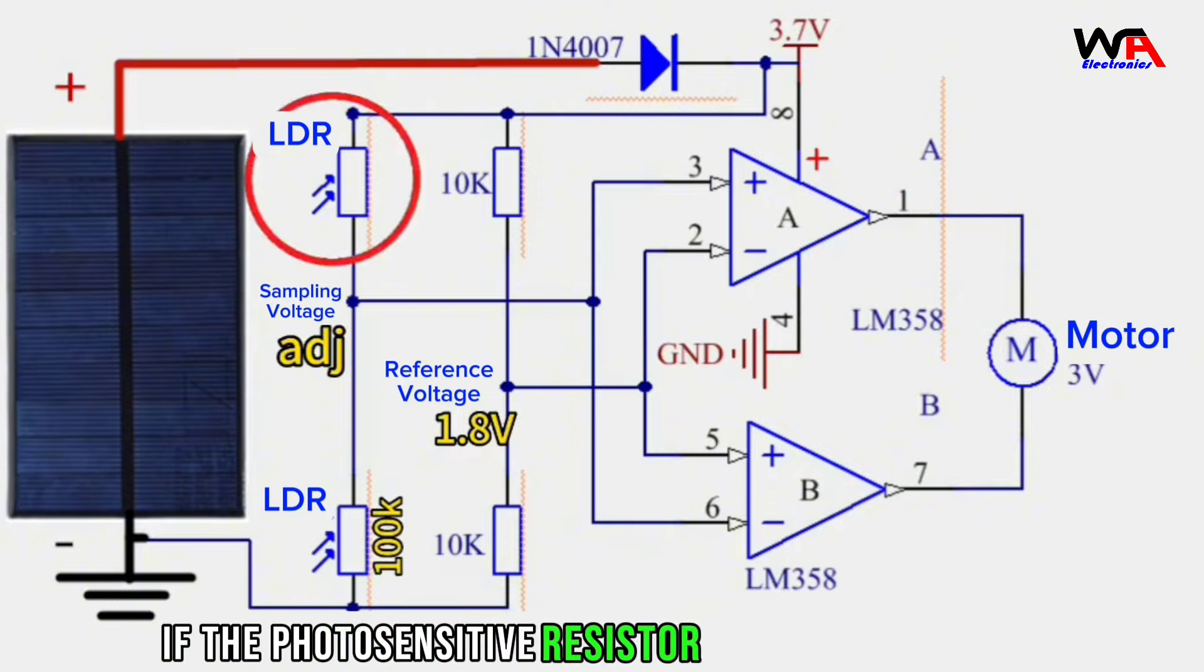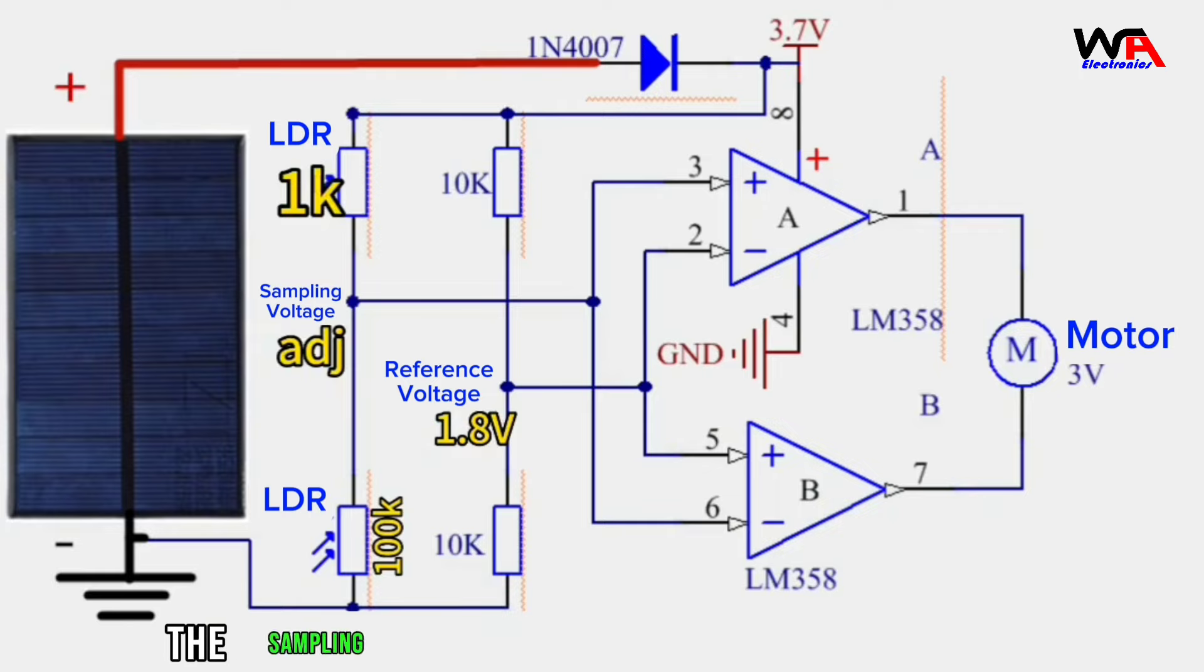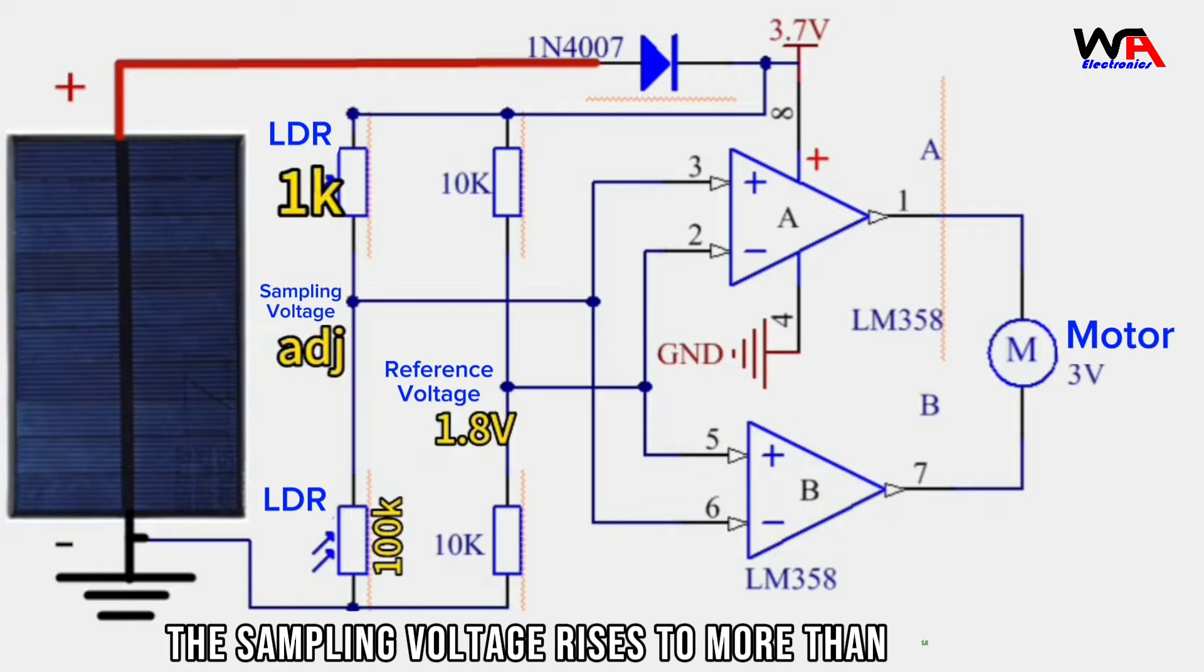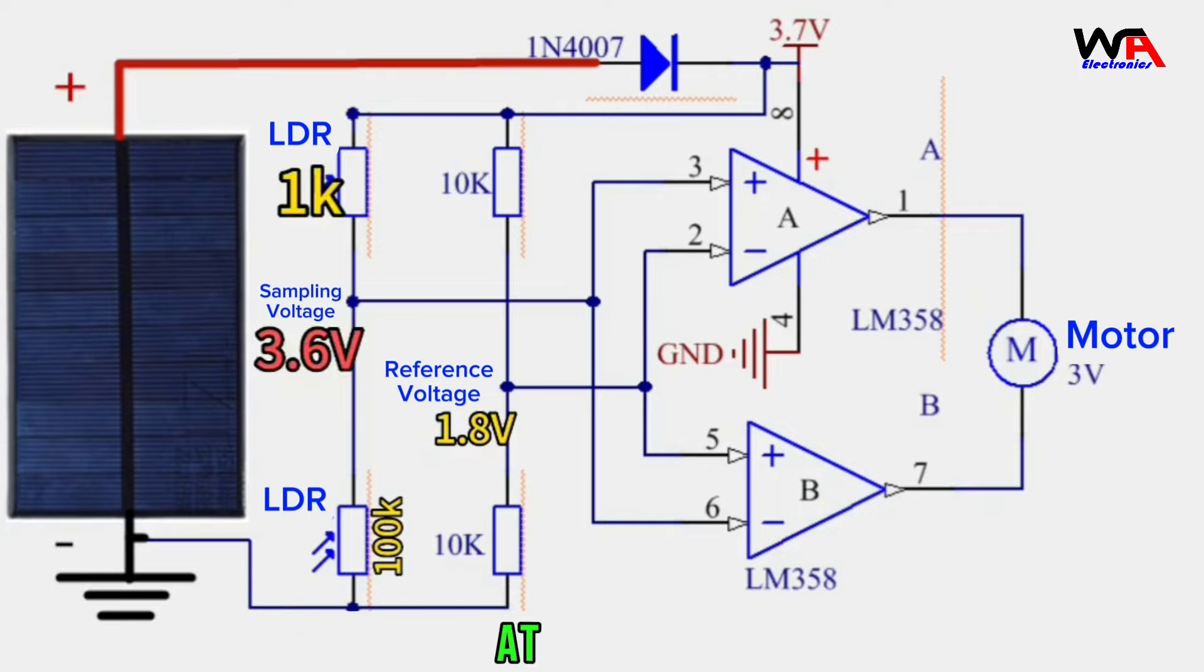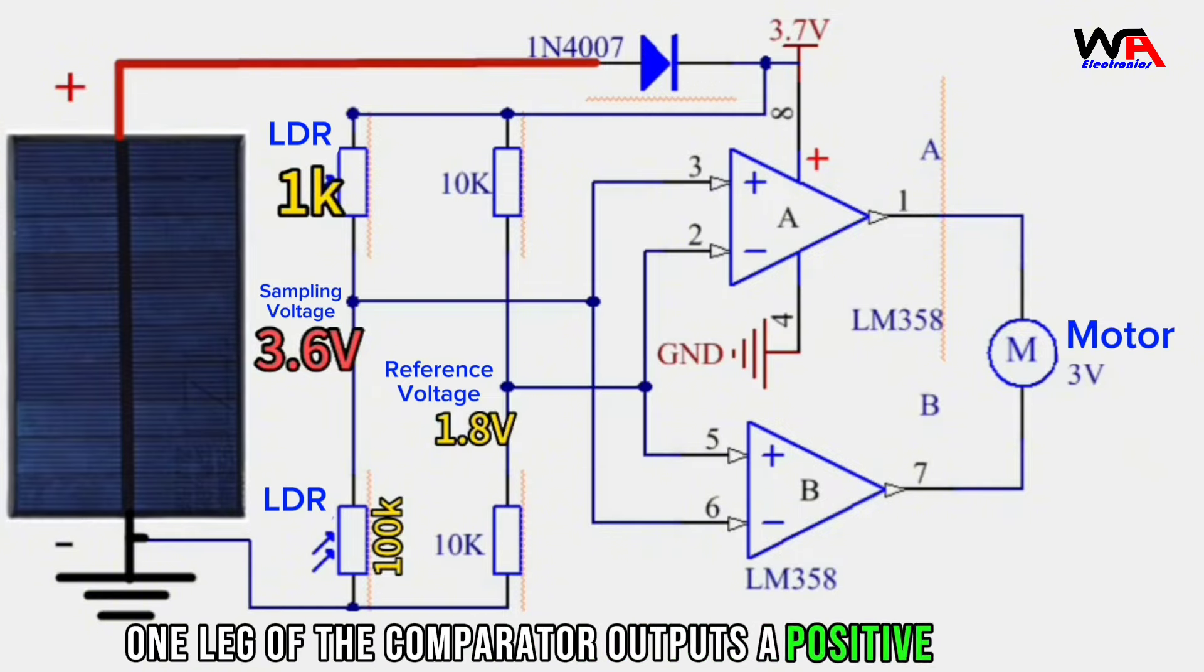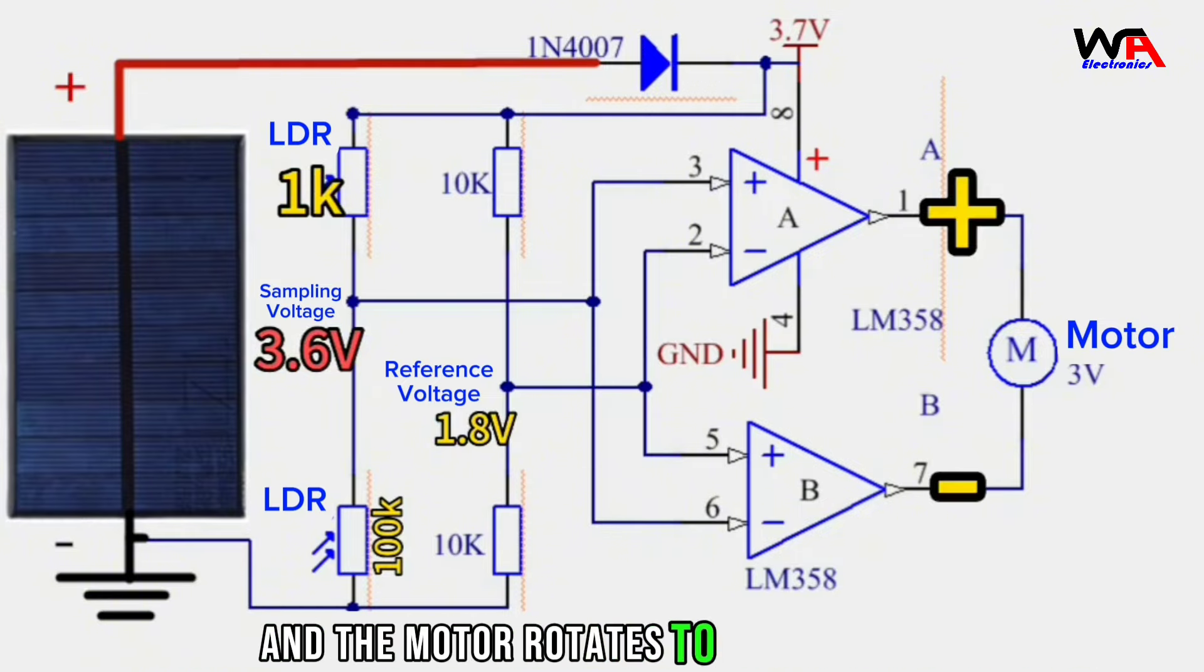If the photosensitive resistor above becomes low, the sampling voltage rises to more than 1.8 volts. At this time, one leg of the comparator outputs a positive voltage and the motor rotates forward.